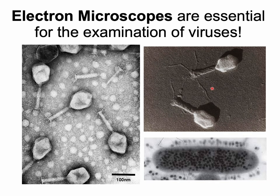Viruses are microscopic, so we need a microscope to see them. However, the light microscopes we use in lab are not powerful enough — to see a virus you need an electron microscope. Our light microscopes go up to about a thousand times magnification, while electron microscopes can reach up to two million times magnification. Here are some micrographs from an electron microscope showing bacteriophages — special viruses that only infect bacteria.